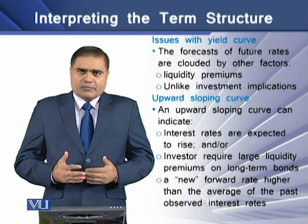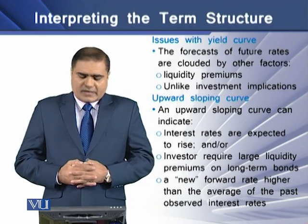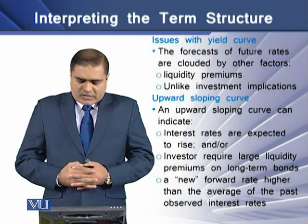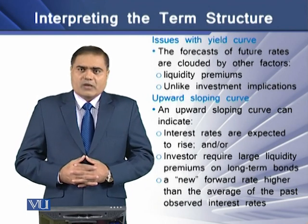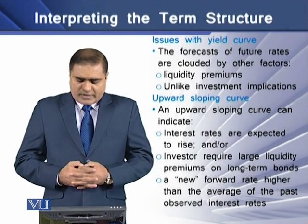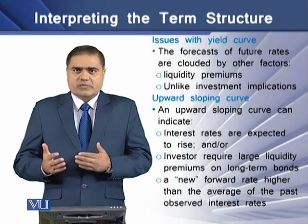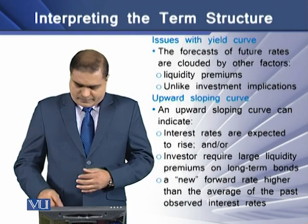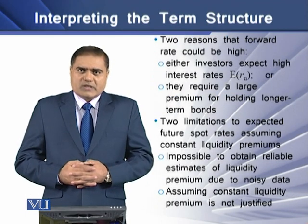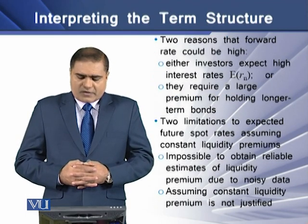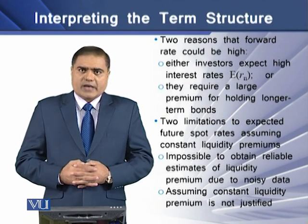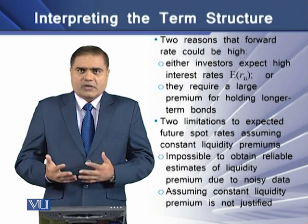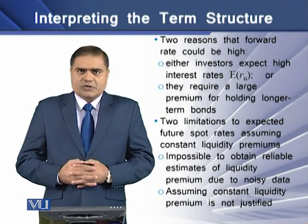An upward sloping curve can indicate that interest rates are expected to rise, or that investors require a large liquidity premium on long-term bonds. A new forward rate higher than the average of past observed interest rates can be high for two reasons: either investors expect high interest rates, or they require a large premium for holding long-term bonds.